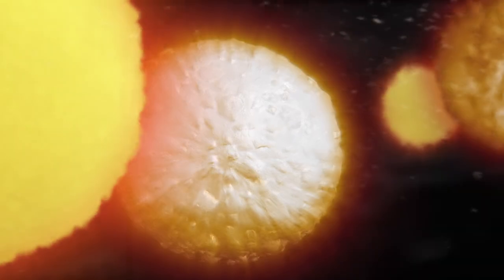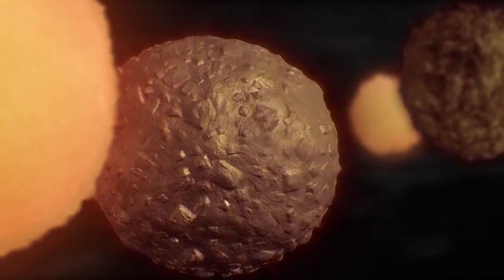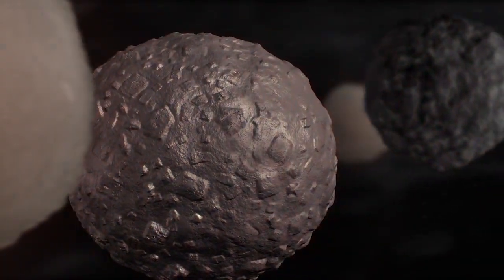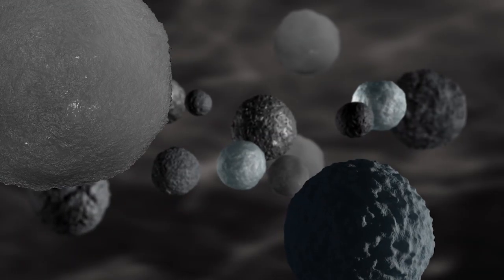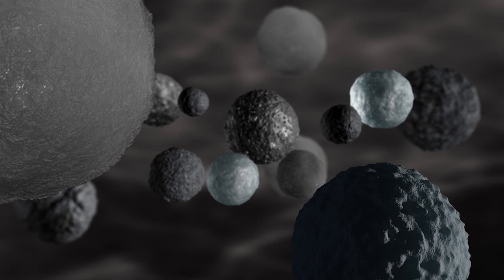Deep within the disk, clumps of dust not much larger than a grain of wheat are flash heated into droplets of molten rock, called chondrules. The source of this heat remains a mystery. Chondrules are destined to become the building blocks of the solar system.